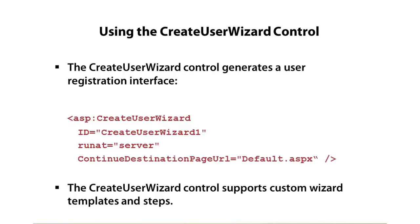The create user wizard control is the registration control. It automatically captures the username, email address, and password — all you have to do is drag it on. You can customize through templates and wizard steps to capture additional data. Once they've registered and hit create user, you can set where they go next using the continuedDestinationPageUrl property — in this case, default.aspx. You can configure all of this visually in Visual Web Developer Express or Visual Studio through the properties window.